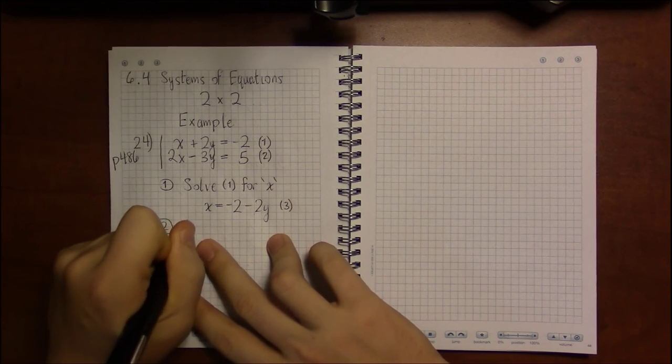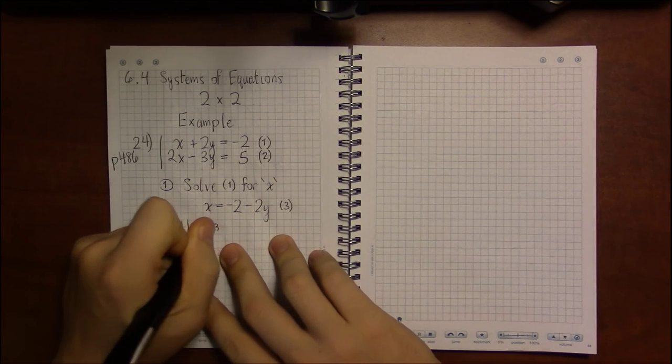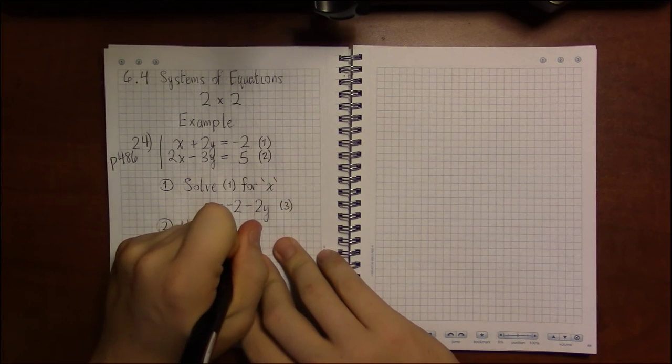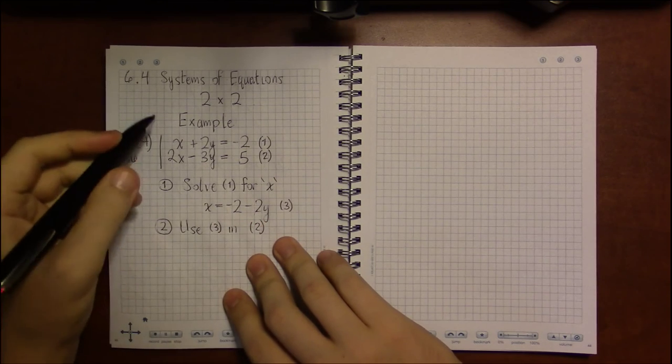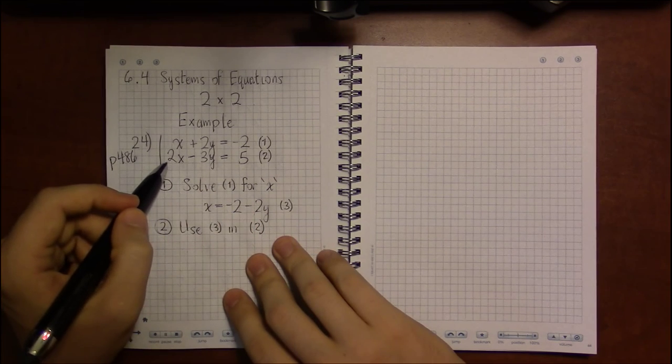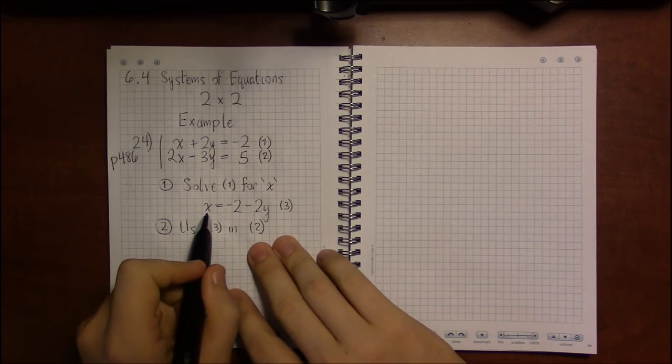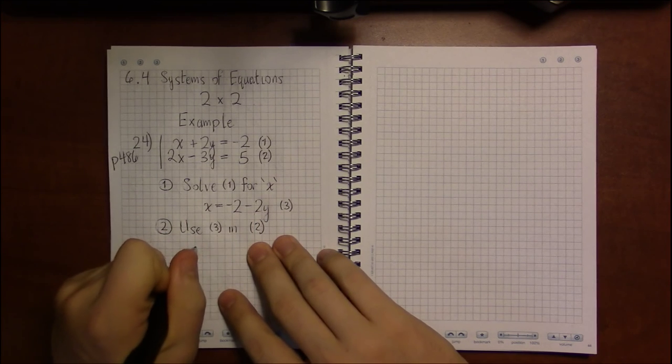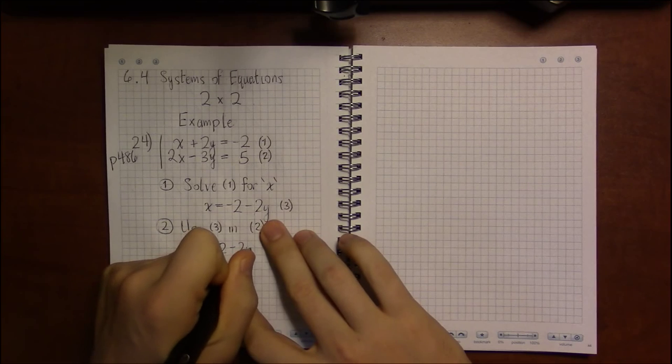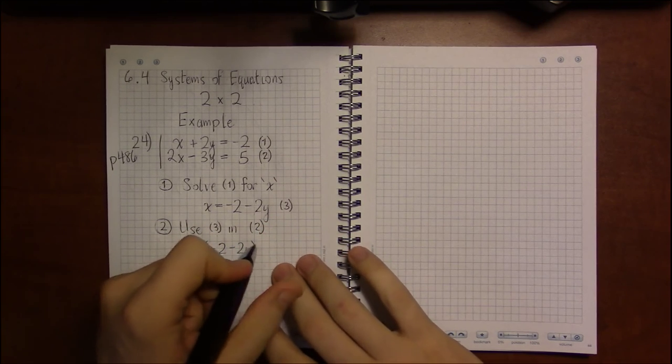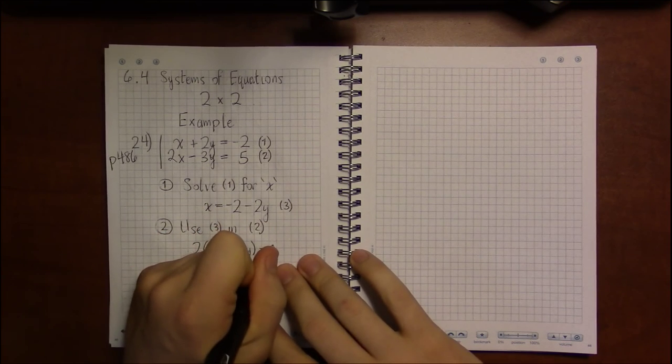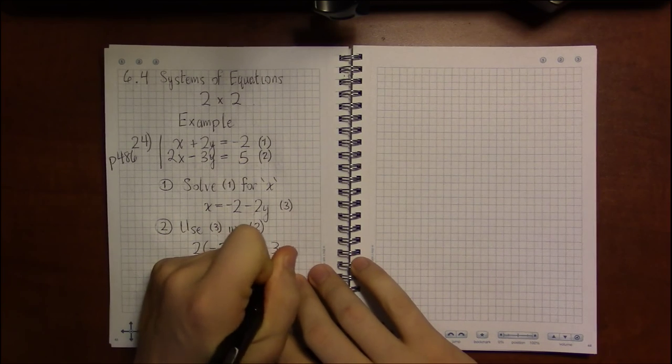Our next step is to use this new equation in all the remaining unused equations. So in this case that would be equation 2 because we used equation 1 to get equation 3 and we've left 2 untouched. So using this in equation 2, we get 2 times (minus 2 minus 2y) instead of x, and then we proceed to copy down the rest of equation 2: minus 3y equals 5.